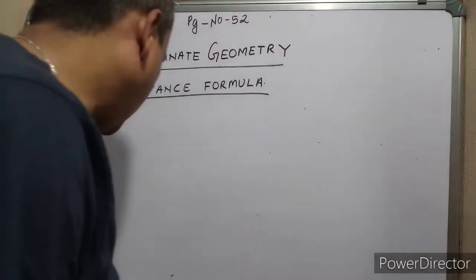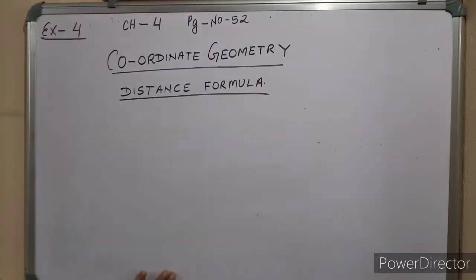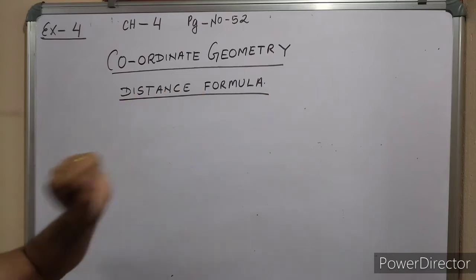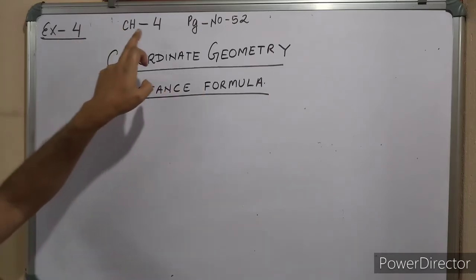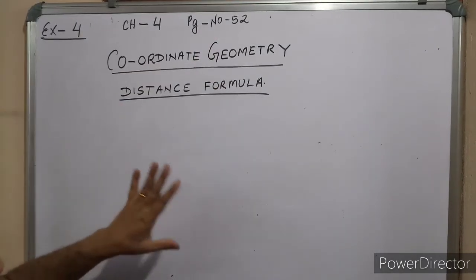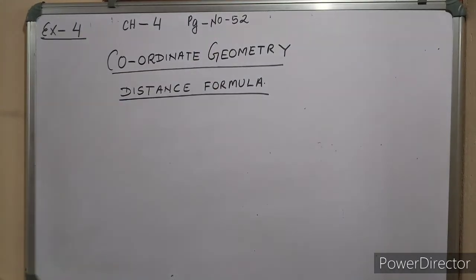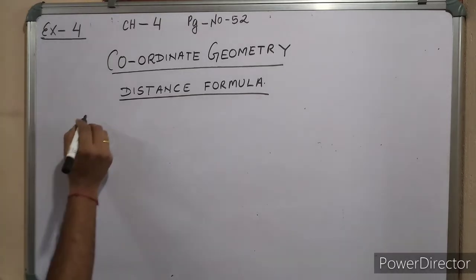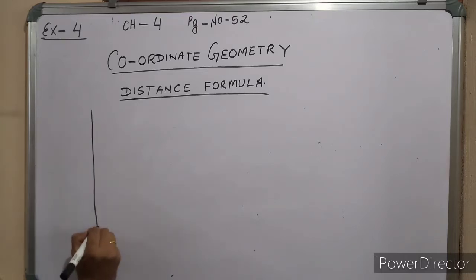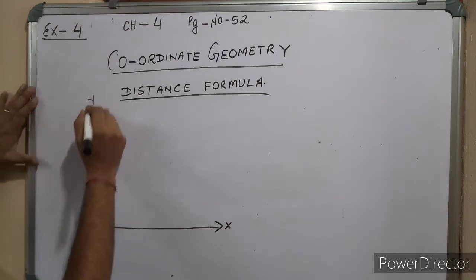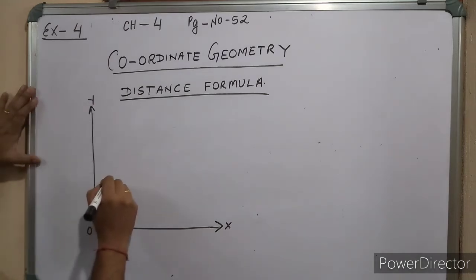Now dear students of class 9, today I'm going to start a new chapter: coordinate geometry, distance formula. This is exercise 4, chapter 4, page 52. In this chapter you will learn how to calculate the distance between two given points. First you have to draw these things: x-axis and y-axis. This is the x-axis, this one is the y-axis.